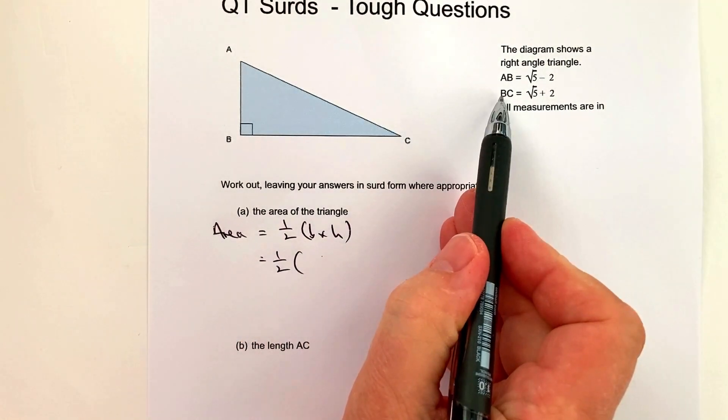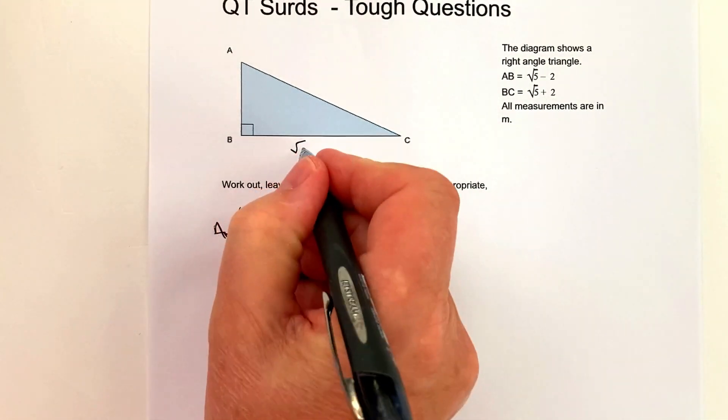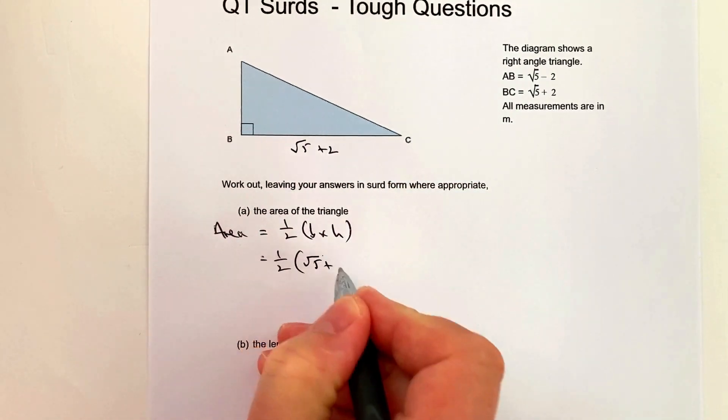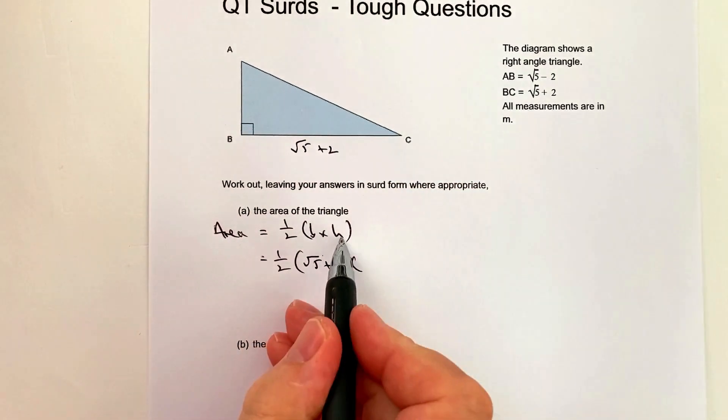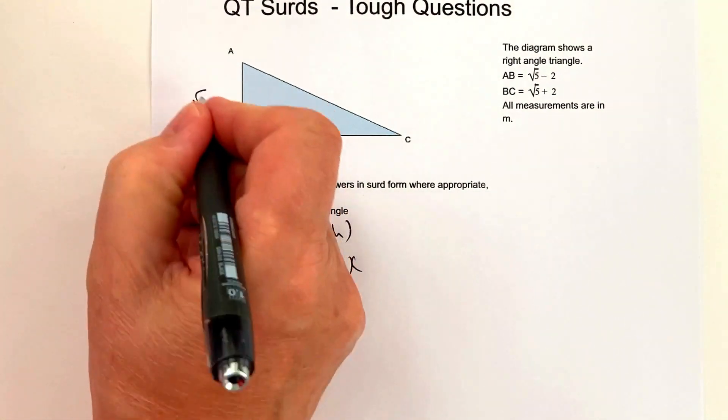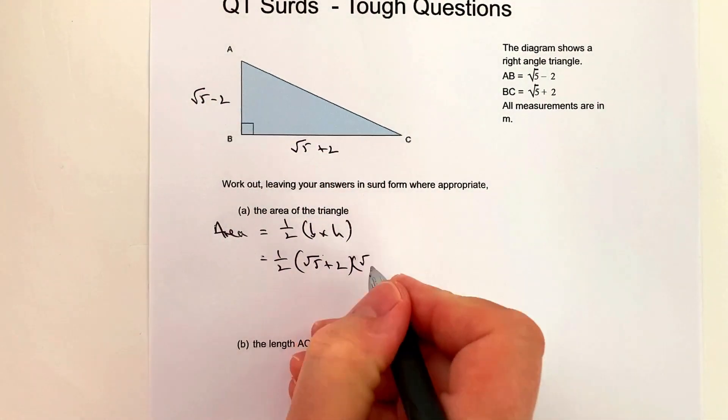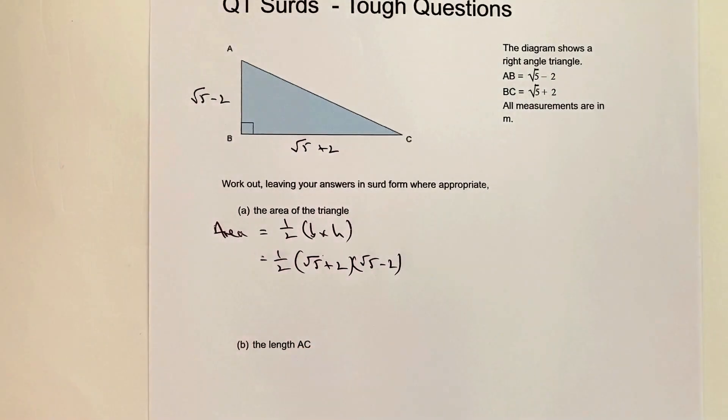The base is length BC, which is √5 + 2. I'm going to multiply that by the height, which is √5 - 2. So it's (√5 + 2) times (√5 - 2). Now it's just a case of working this through.